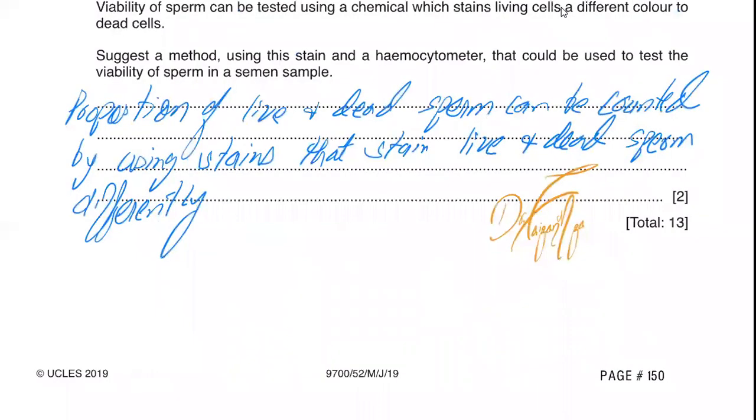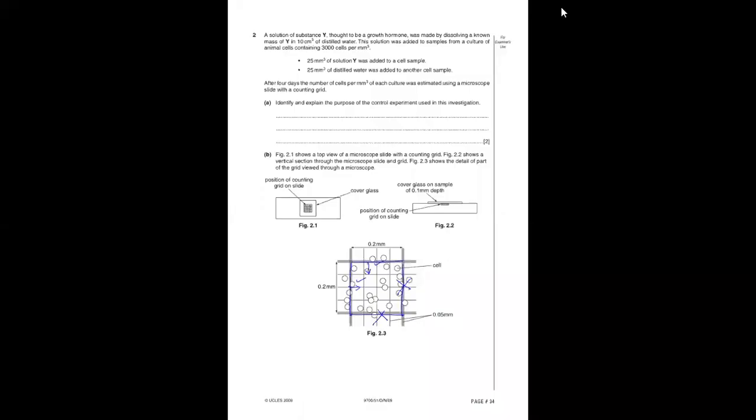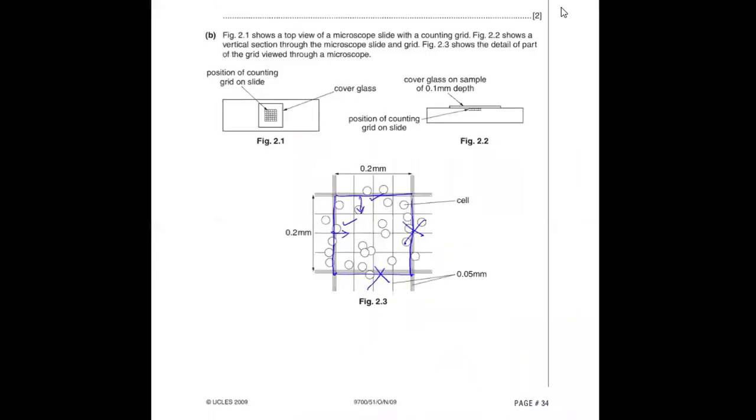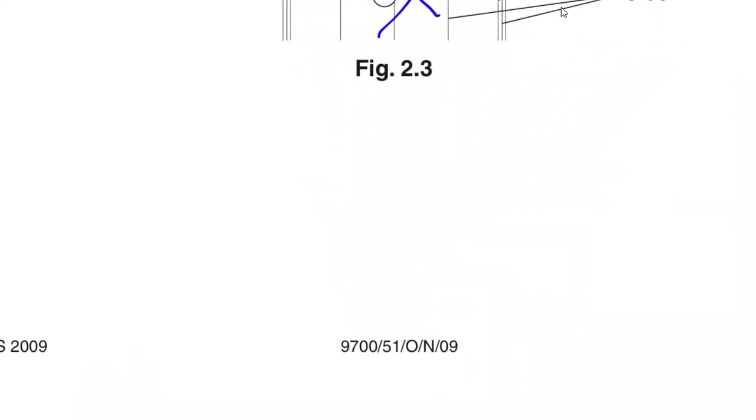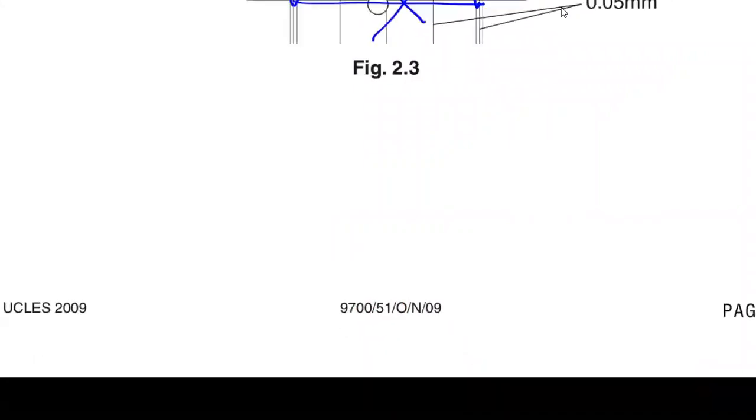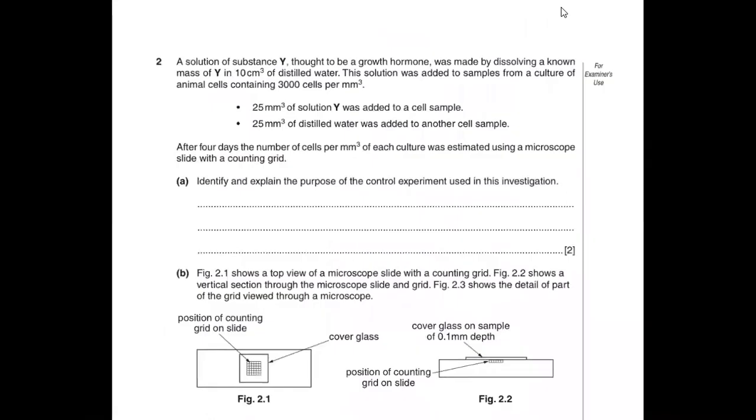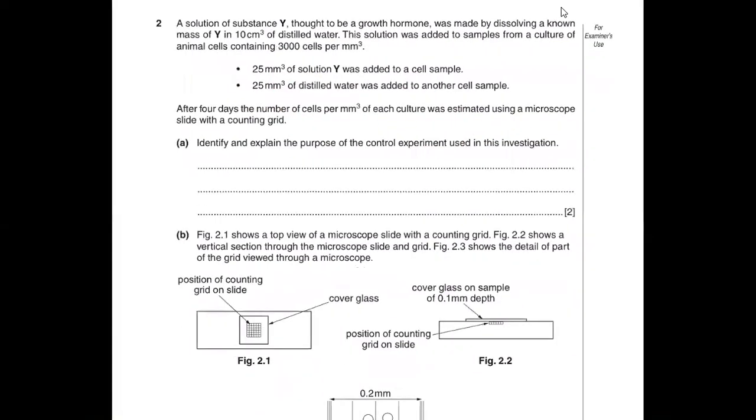Now the question I've just discussed, I would recommend you try to re-solve and re-attempt this yourself and see what you actually got from this video. Make sure you do a self-assessment of this question so you know what you could grasp. It's not always with semen samples. They gave a similar question in October-November 2009 variant 51. The counting chamber was shown with a cell sample being given different growth hormones.